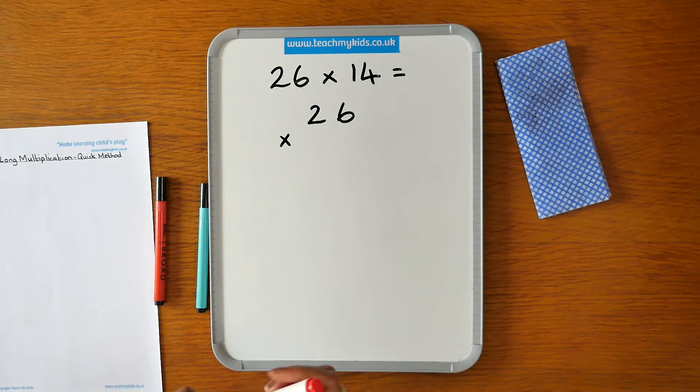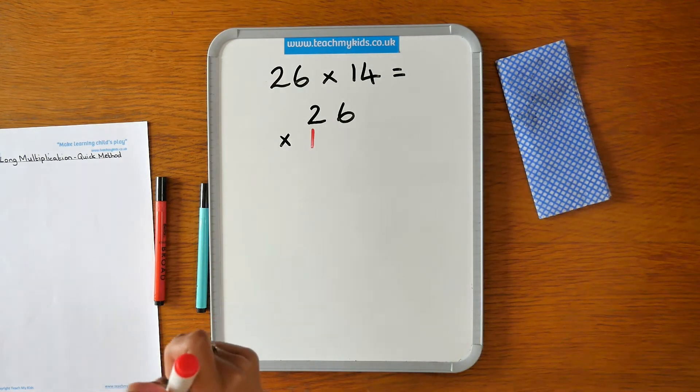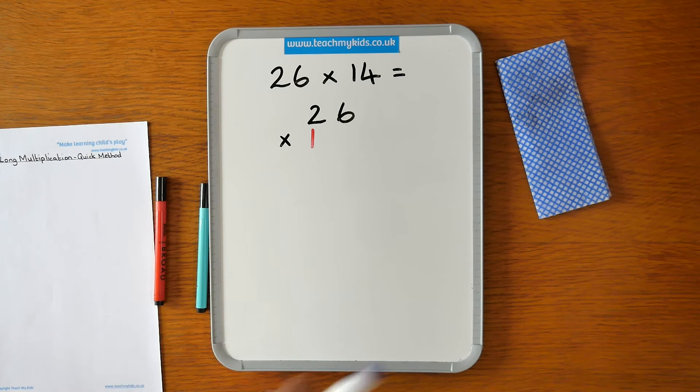I'm going to use different colors so that you can see where the numbers are coming from when we multiply them. You don't need to use different colors.